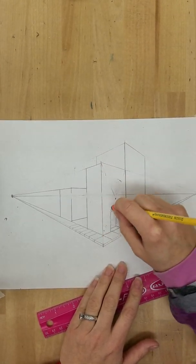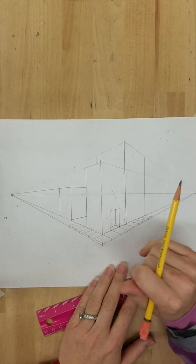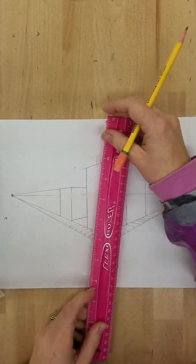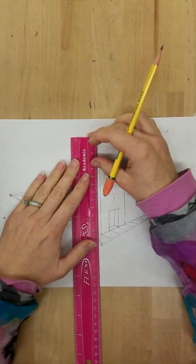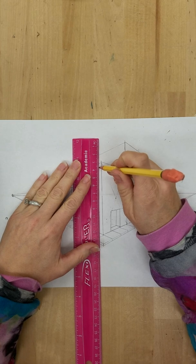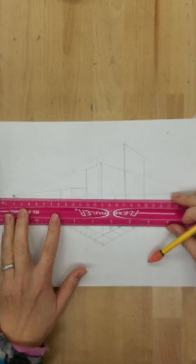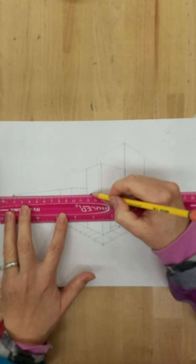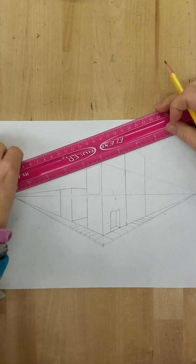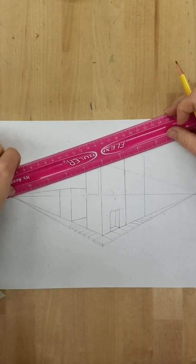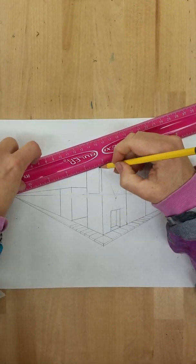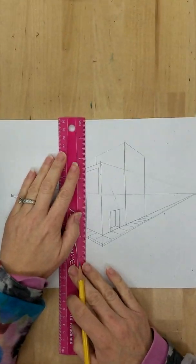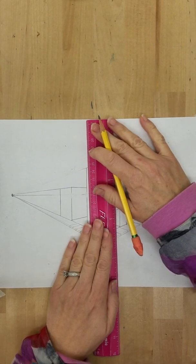Let's now put a window on over here. Vertical line, I'm going to put a big picture window in. Take that back for step two.